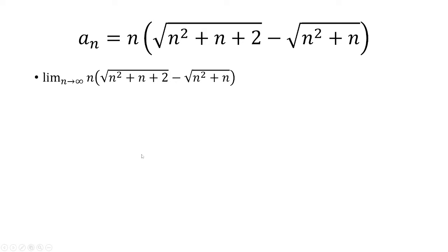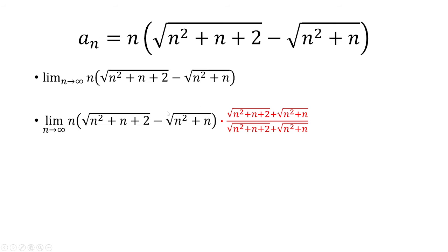The way we're going to solve it is by multiplying by the conjugate of whatever is inside the parentheses. And so the conjugate is going to be the same square roots, but instead of minus, it's going to be plus.